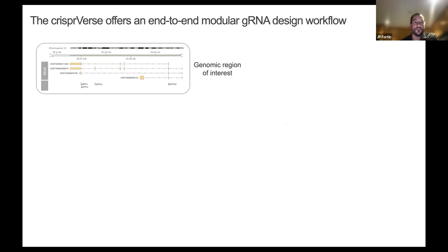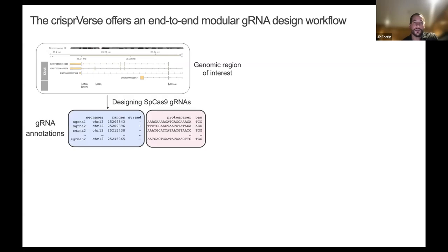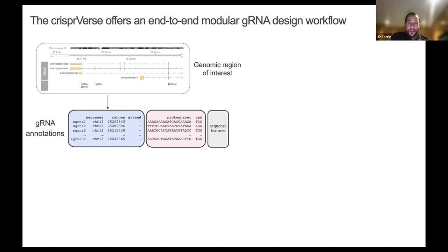The idea behind CRISPRverse is we start with a region of the genome — in this example, I'm using the KRAS gene in the human genome. The CRISPRverse allows you to specify a specific nuclease, in this case Cas9. The first step is to create a genomic ranges object of the target sequences of the guide RNAs. Once we have this core genomic ranges, we create functionalities to add to the metadata columns, and this whole object is what we call a guide set — an extended class of genomic ranges.